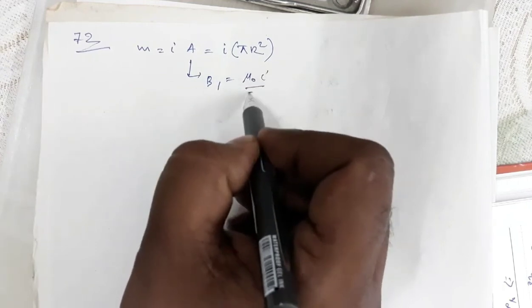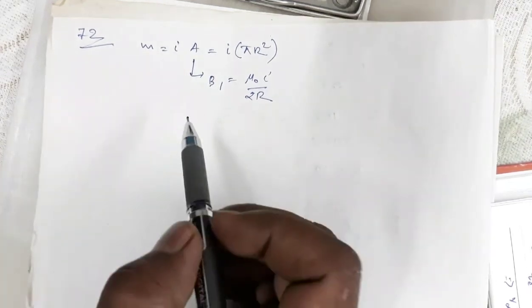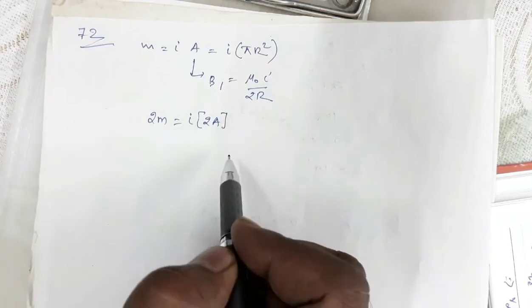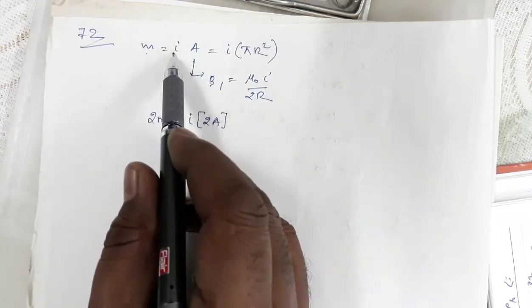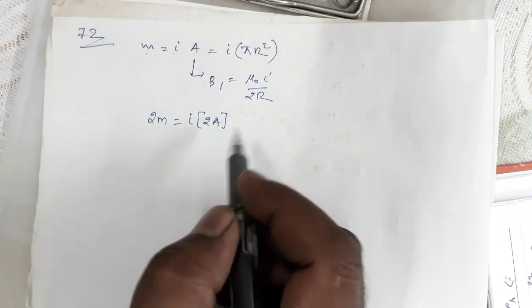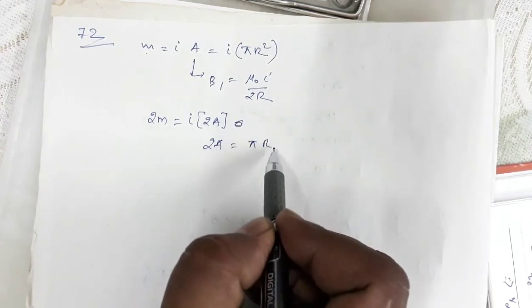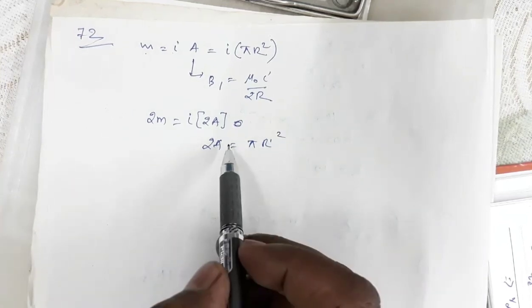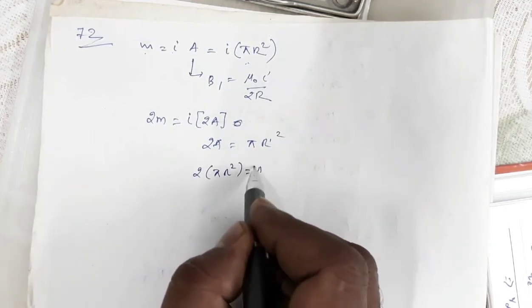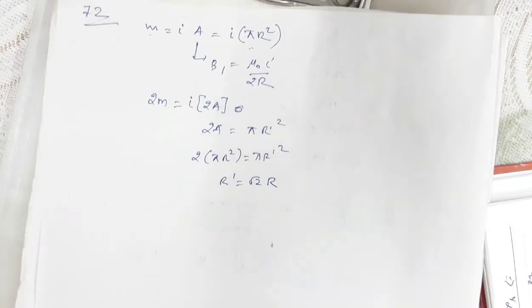When the dipole moment is doubled keeping the current constant, the area must be doubled. If r' is the new radius, then 2A = πr'², and since A = πr², we get 2πr² = πr'², so r' = √2·r.